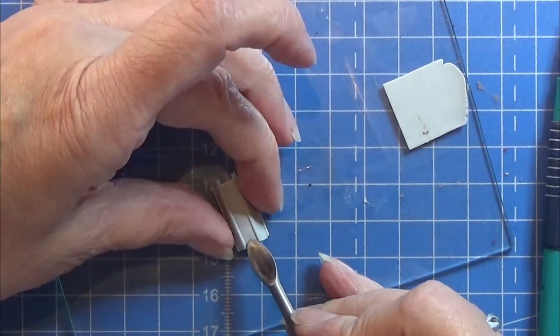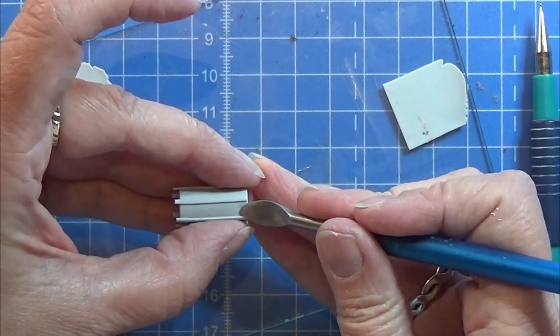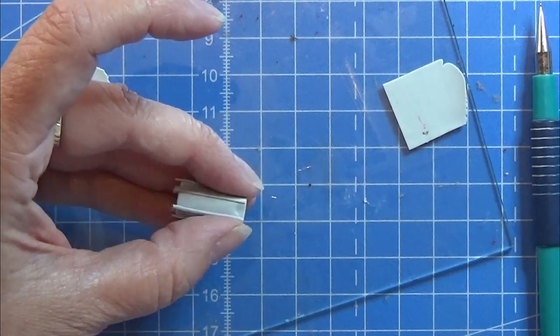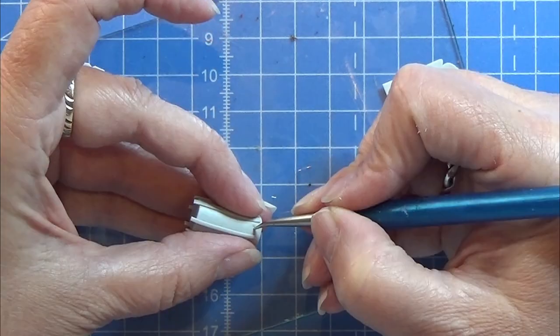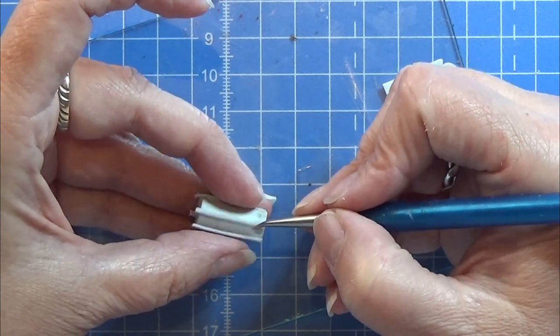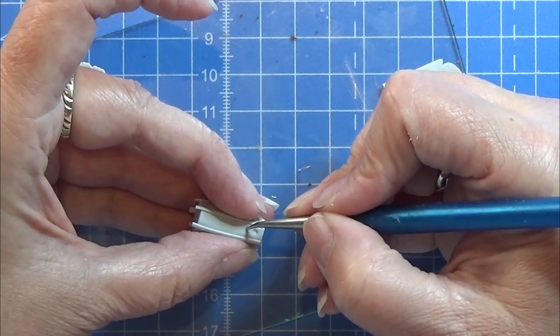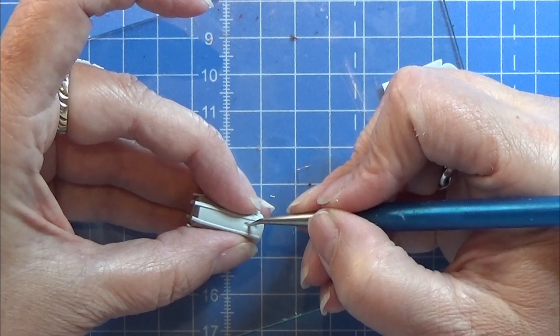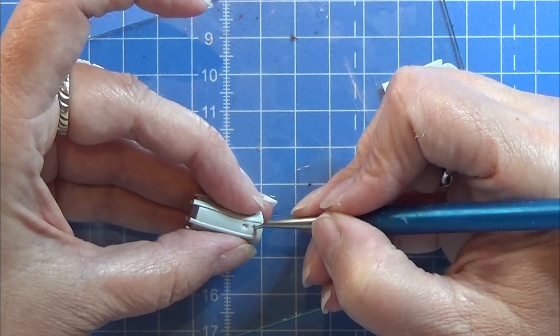Then I'm going to make an indent for the doorway and a lot of small indents for a lot of small windows, just like you see me do here, one at a time, all the way up the tower on all sides of the tower.